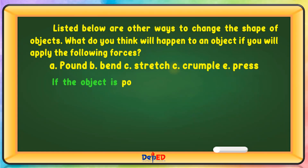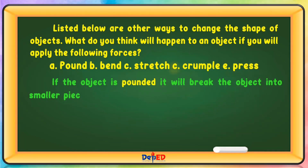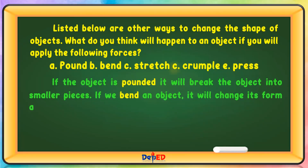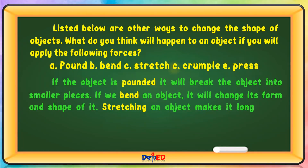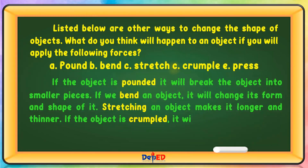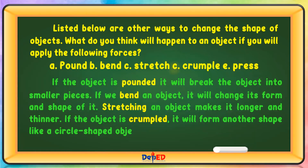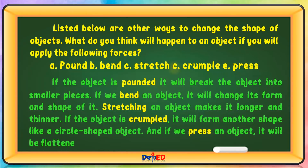If the object is pounded, it will break into smaller pieces. If we bend an object, it will change its form and shape. Stretching an object makes it longer and thinner. If the object is crumpled, it will form another shape like a circle. And if we press an object, it will be flattened.